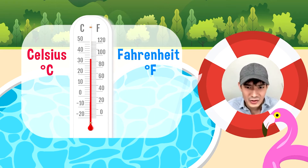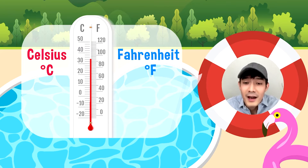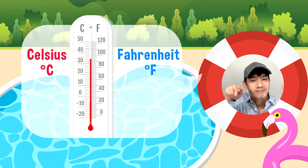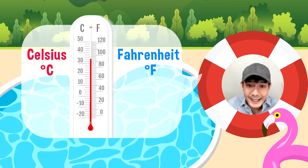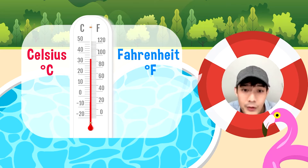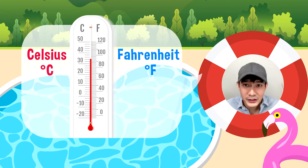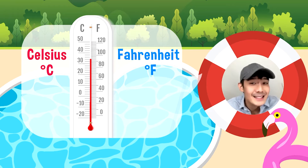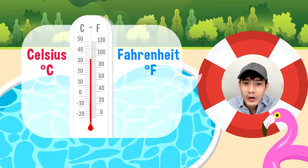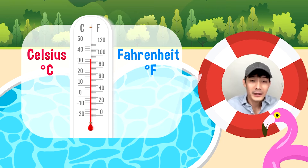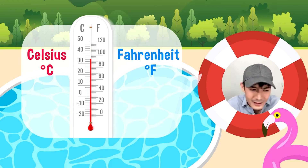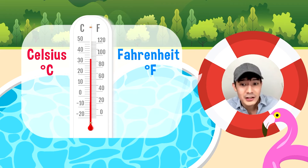Since nabanggit ko ang Fahrenheit at Celsius, ano ba nga ba ang mga ito? Ang mga ito ay two systems used for specifying units of measure — ang English at metric system. Ang Fahrenheit scale, or degrees Fahrenheit, na isang English unit of measure, ay ginagamit sa United States to measure temperature. Habang ang Celsius scale or degrees Celsius ay ang metric unit na ginagamit naman natin dito sa Pilipinas. At dagdag na kaalaman: water freezes at 0 degrees Celsius and boils at 100 degrees Celsius. While in Fahrenheit, water freezes at 32 degrees Fahrenheit and boils at 212 degrees Fahrenheit.